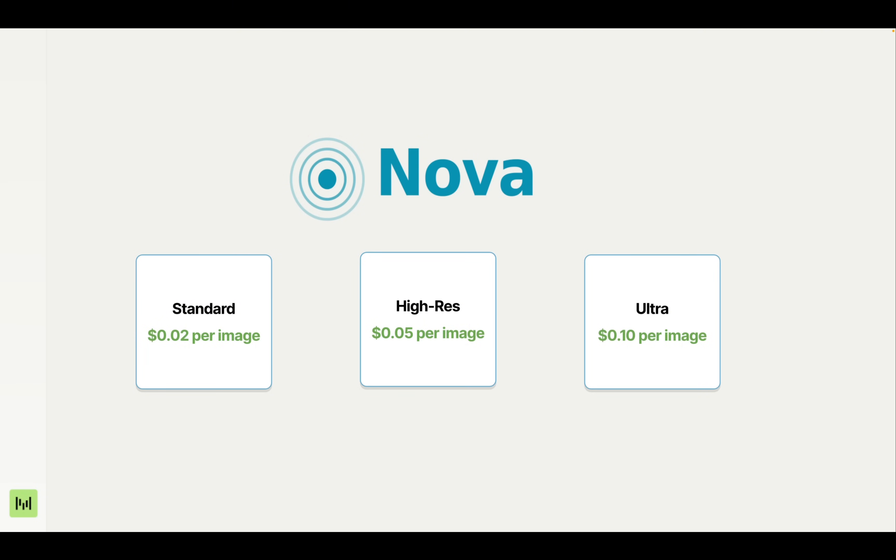This is Nova, our fictional company for the demo series. It's an image generation service — customers send prompts to an API and get back AI-generated images. The pricing is straightforward: standard images at $0.02, high res at $0.05, and ultra at $0.10. Over the next few episodes, we'll build the billing system that powers this.